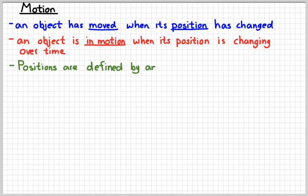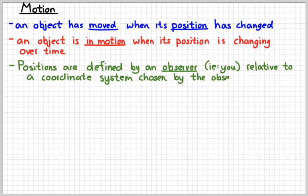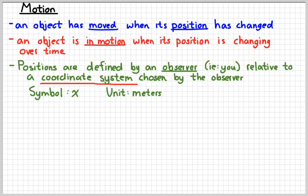When we talk about positions, positions are things that are defined by an observer. Typically, the observer is going to be you, relative to some coordinate system that you as the observer would choose. The symbol that we use for position is the letter x, lower letter x. The easiest way for us to measure positions are in meters, like a certain number of meters from some position that we define to be zero. We refer to this system as a frame of reference.